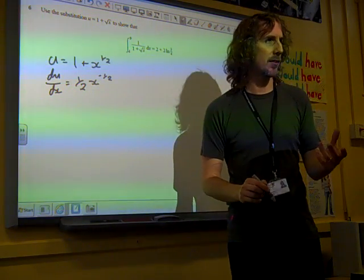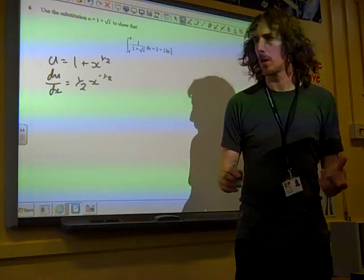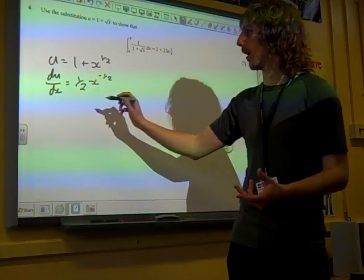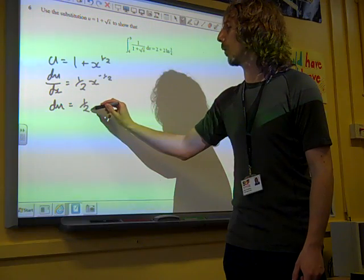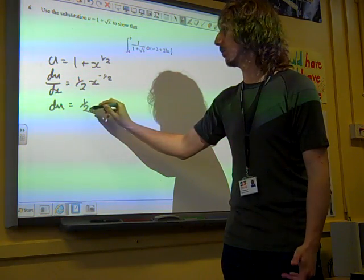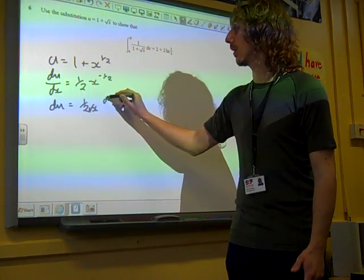That's what we get if we differentiate 1 plus x to the half. So as we've rearranged that, well, what have we got? We've got du is 1 over 2 root x, is that all right, dx.